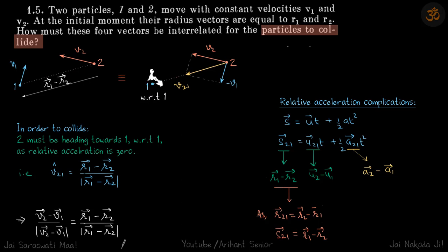We will analyze it with respect to particle 1. This will be -v₁, and this is v₂. The vector sum will give v₂₁, which is the velocity of 2 with respect to 1.